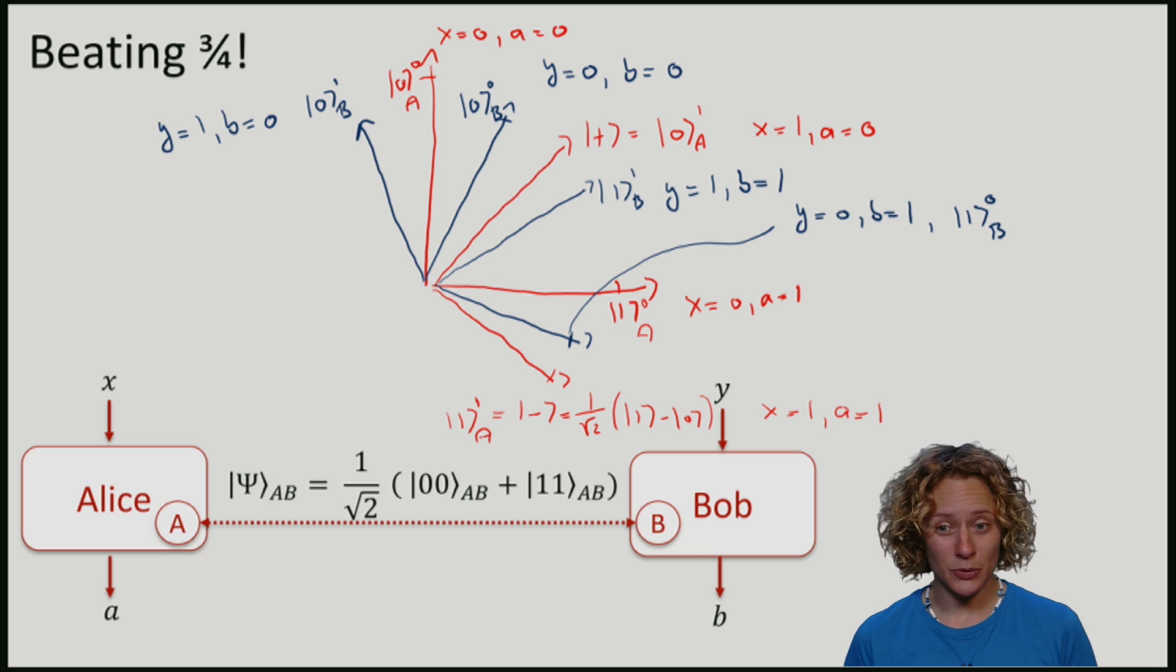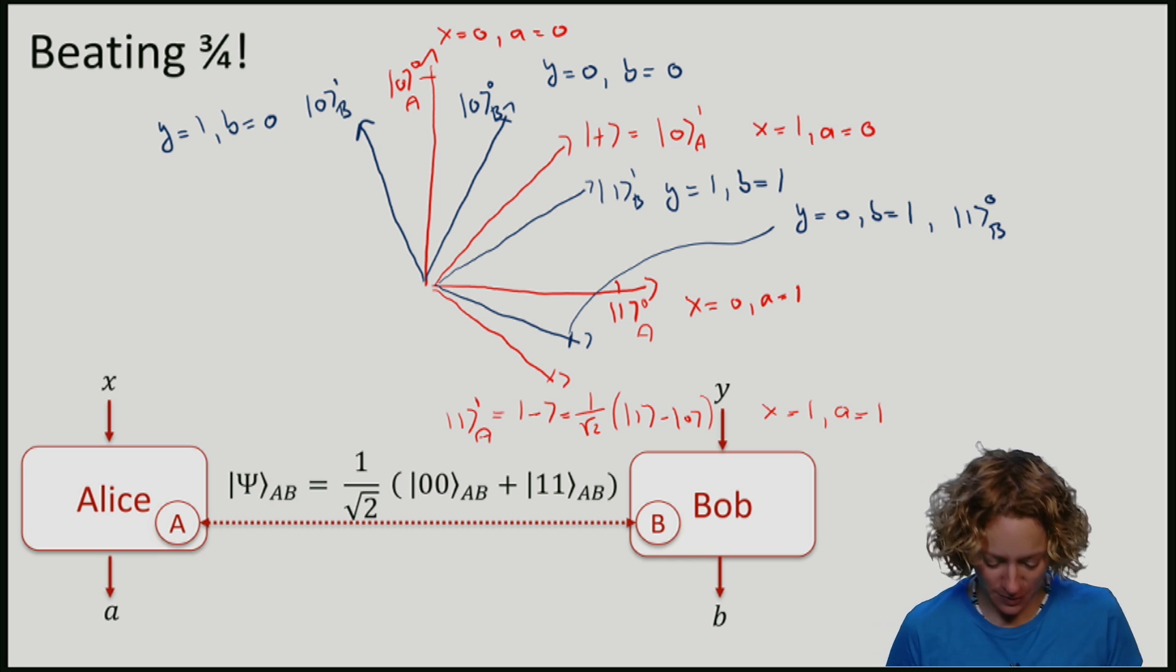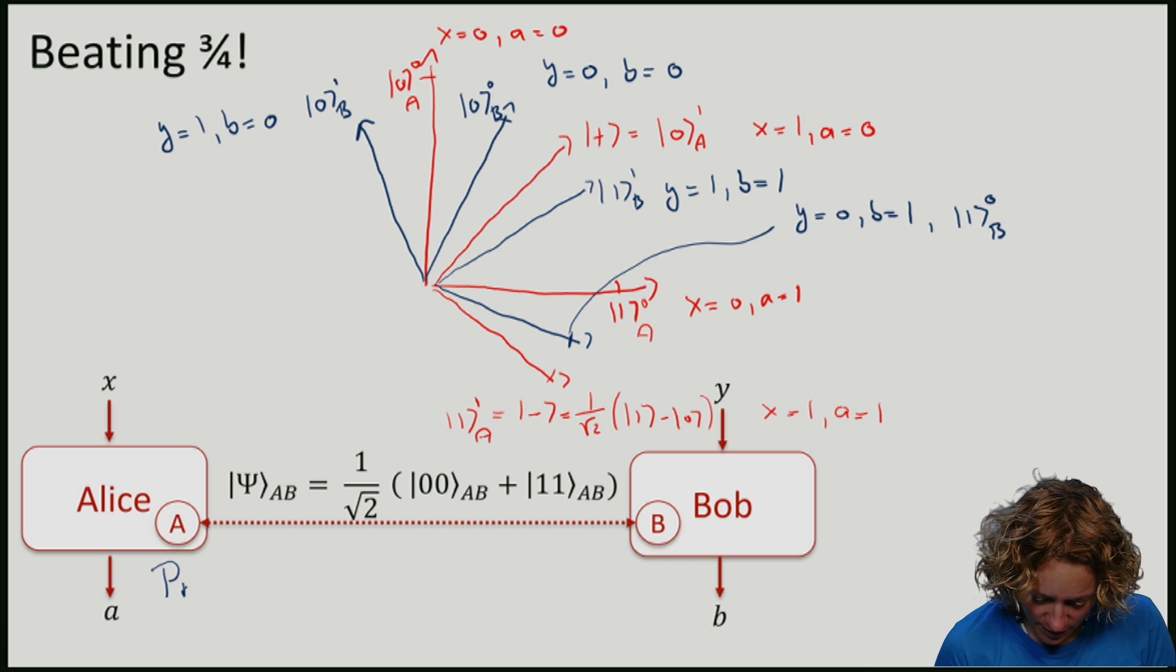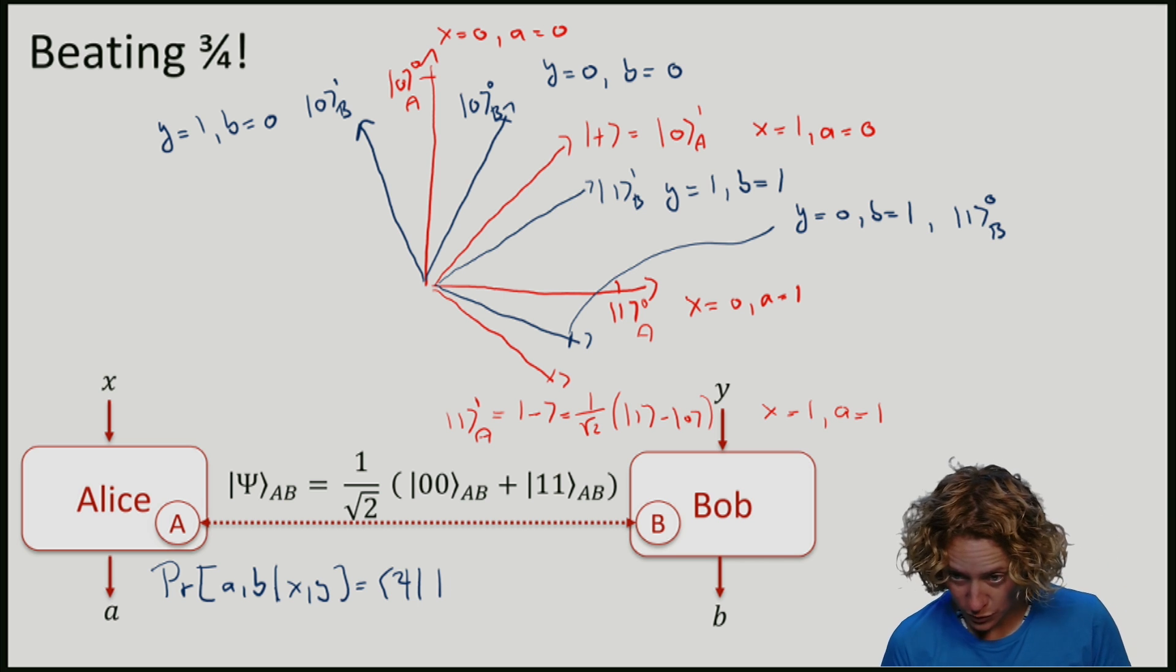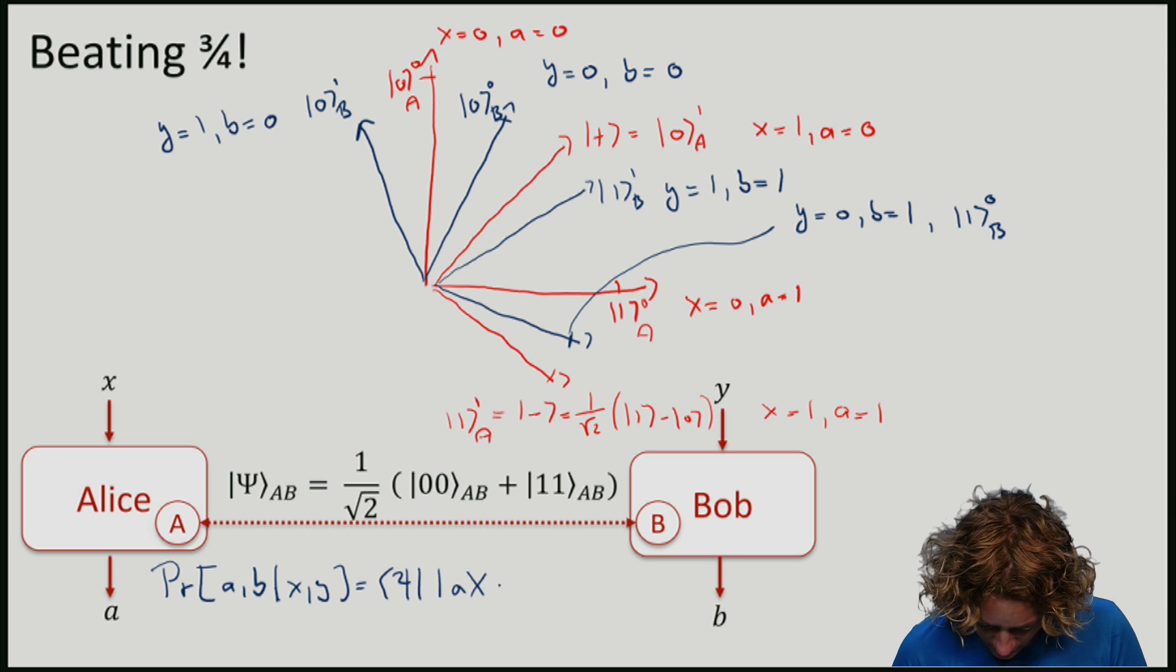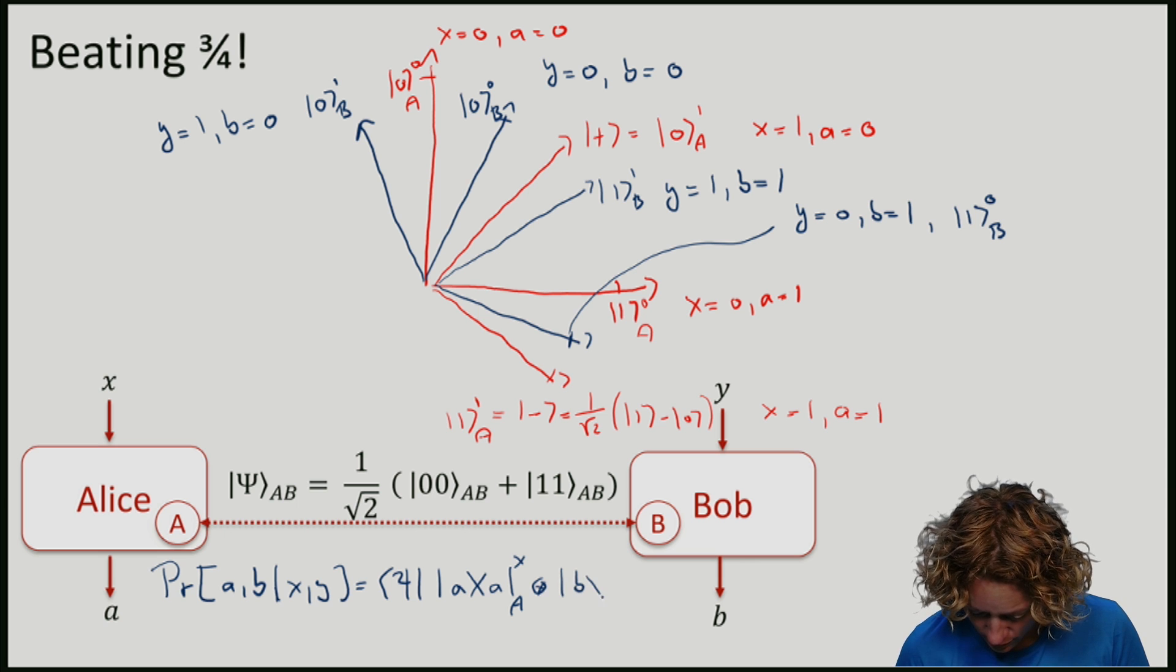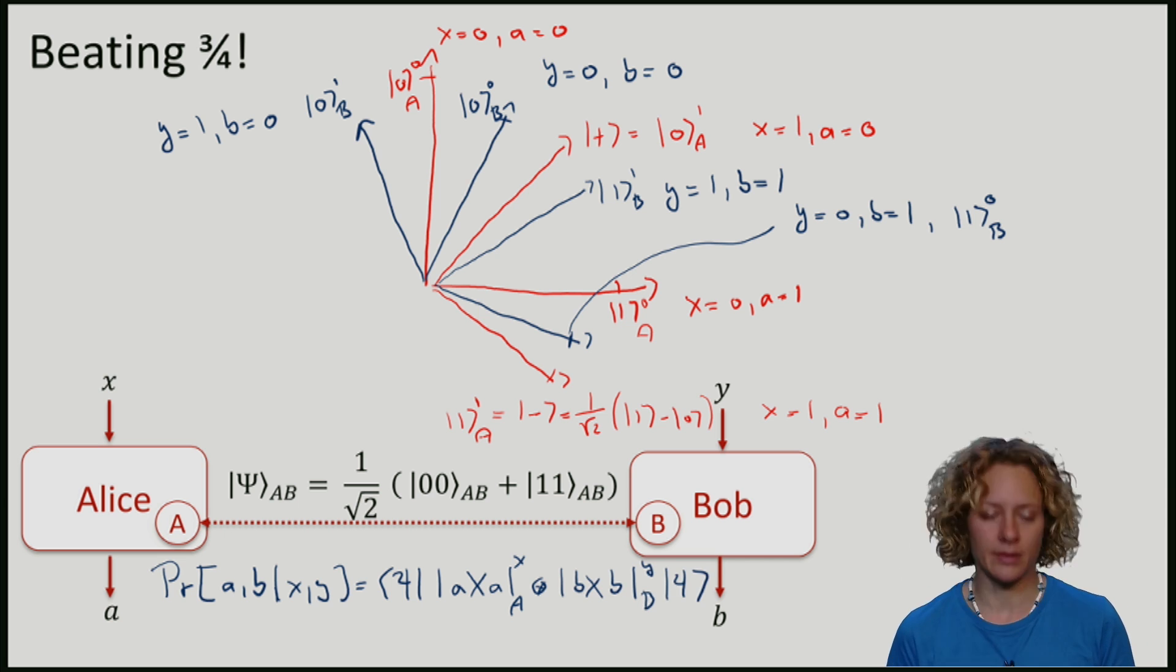If you want to know now how we can compute the probabilities of certain measurement outcomes, we have to compute the probability that they will get outcomes a and b given questions x and y is given by psi. Here I have the measurement operator for Alice, which is a for Alice for question x, tensor b for question y for Bob, on the maximally entangled state. I'm not going to perform this calculation here, but in the lecture notes you can find all these probabilities for their strategy.